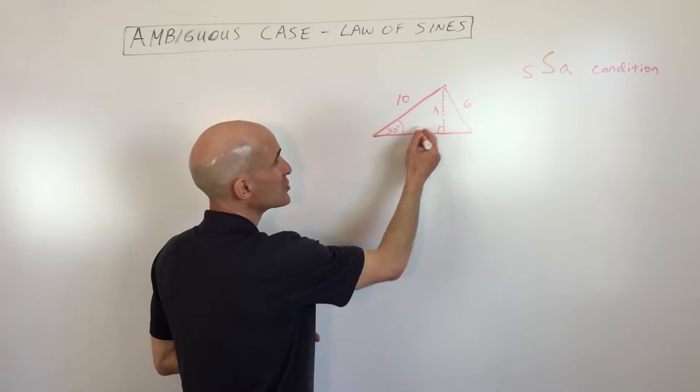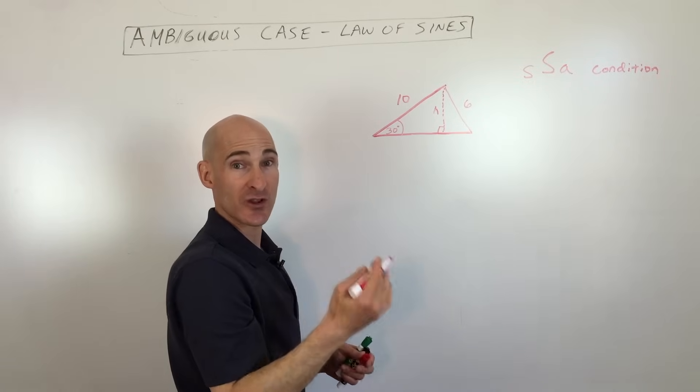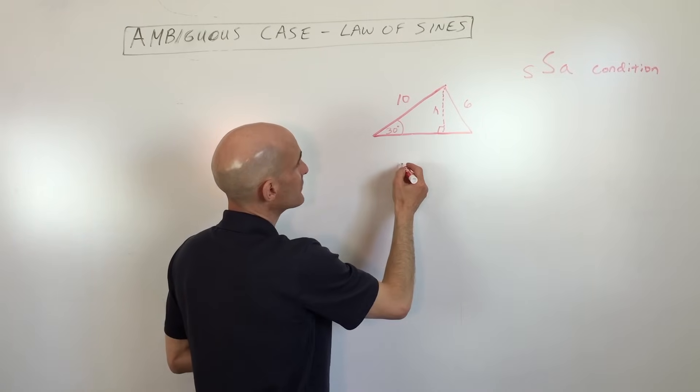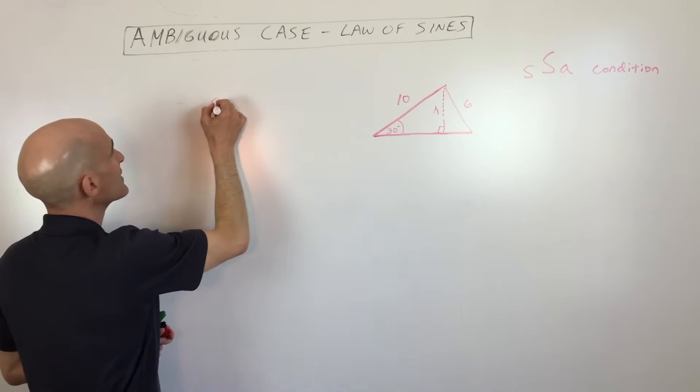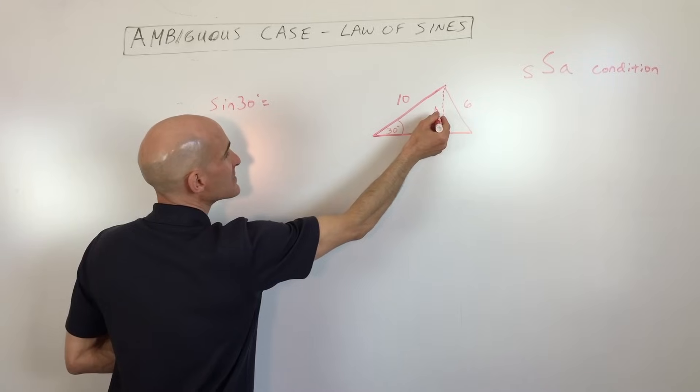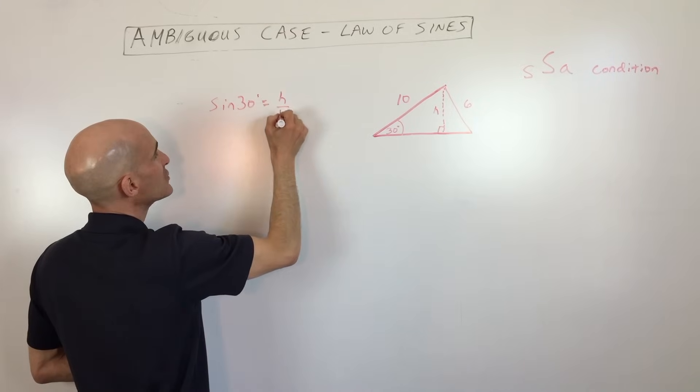And so the way you would do that is you can just use regular right triangle trigonometry like your SOHCAHTOA, and so you would say, alright, the sine of 30 degrees. Let's put that over here. So we've got sine of 30 degrees equals the opposite side over the hypotenuse, so that's H over 10.